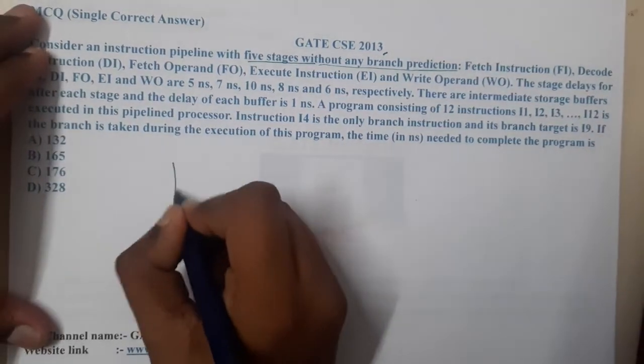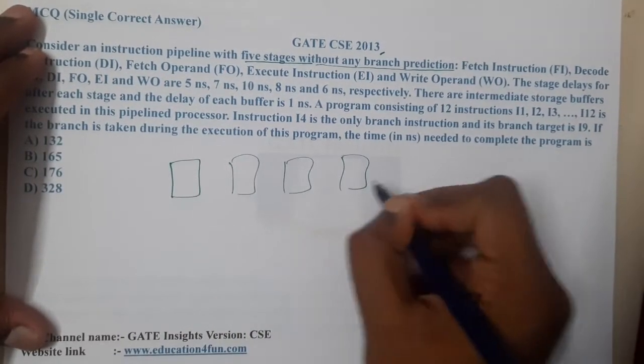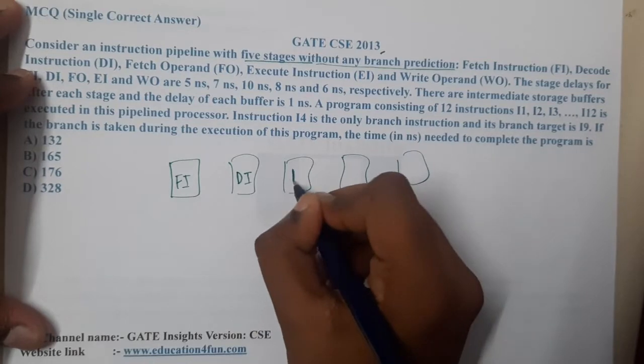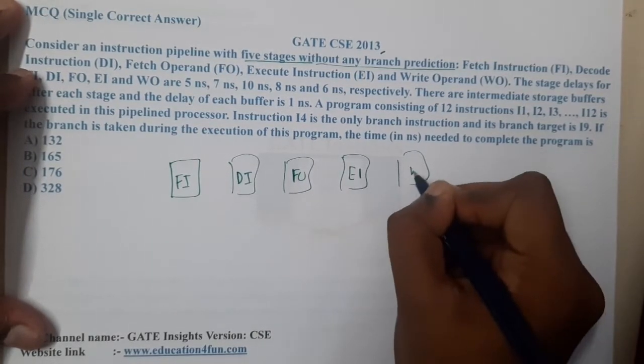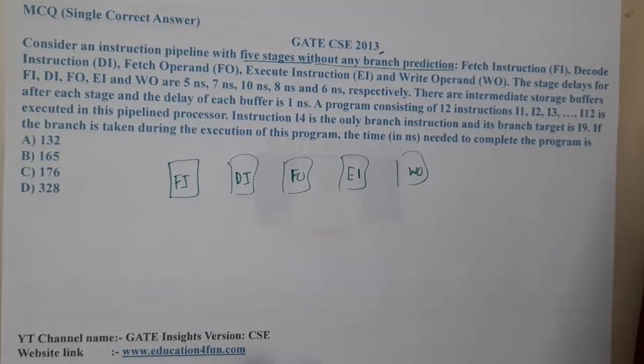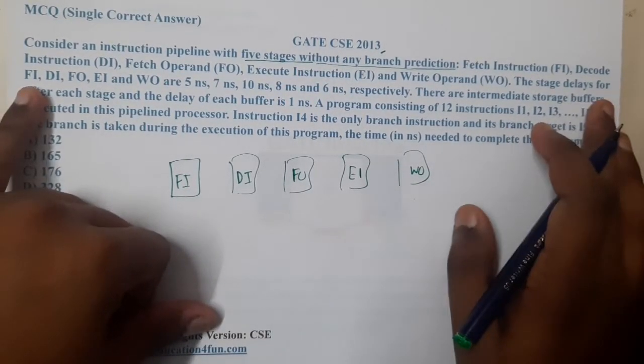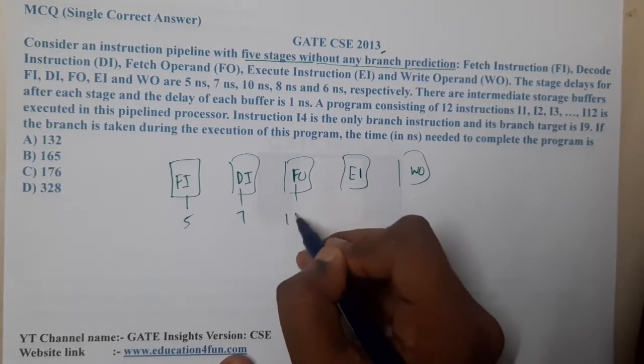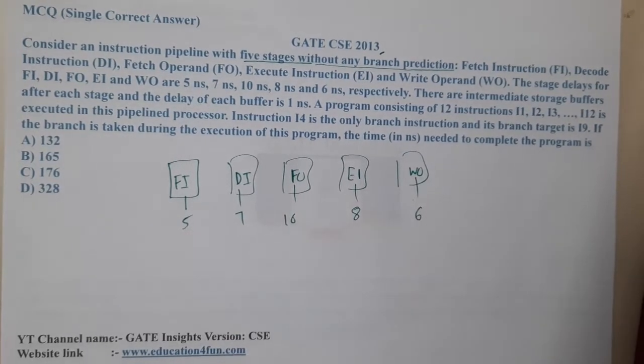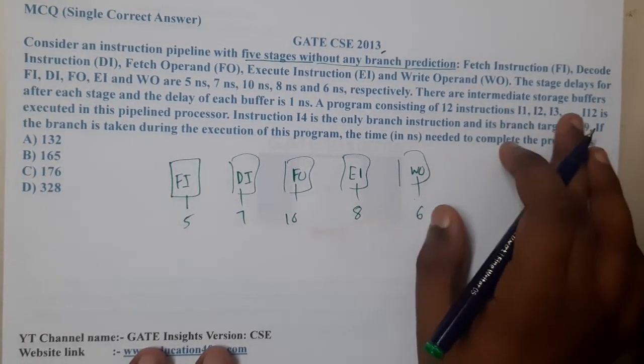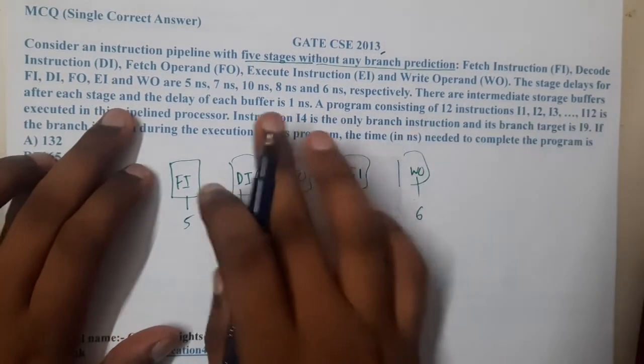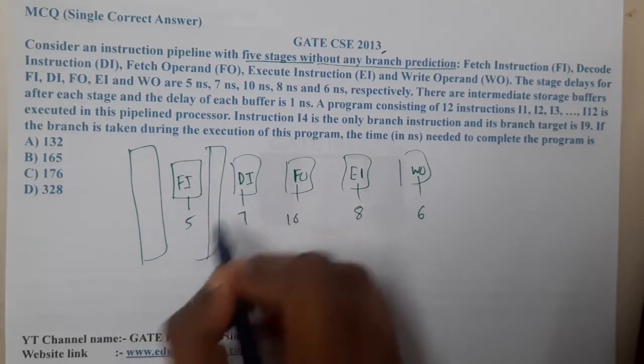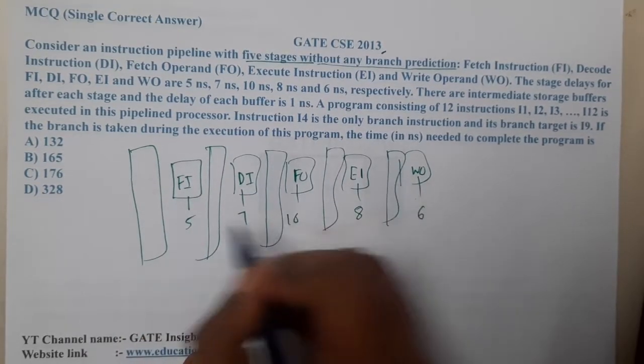Let us start. They told five stages, right? So one, two, three, four, and five. The first instruction is fetch instruction, the second is decode instruction, then fetch operand, then execute, then write operation. The stage delays of FI, DI, FO, EI are given as 5 ns, 7 ns, 10 ns, 8 ns, 6 ns respectively. There are intermediate storage buffers after each stage and delay of each buffer is 1 nanosecond.